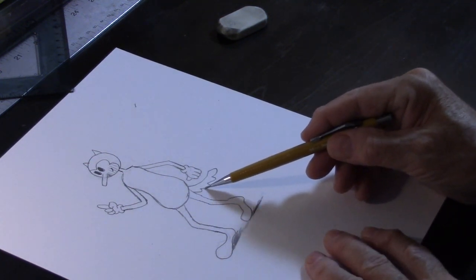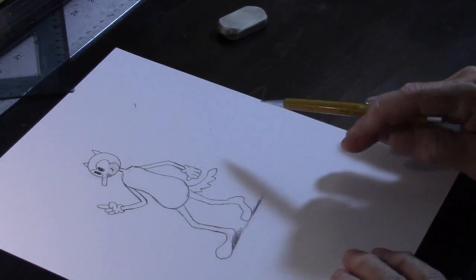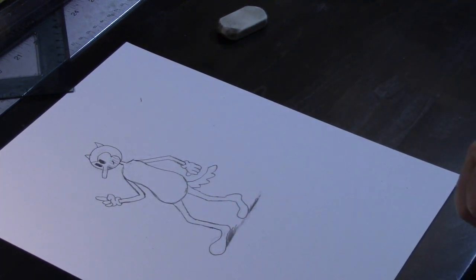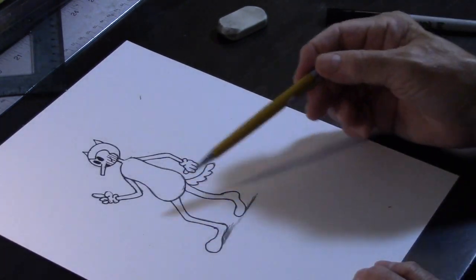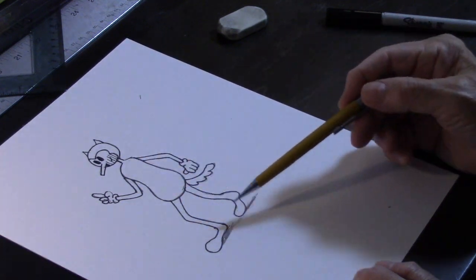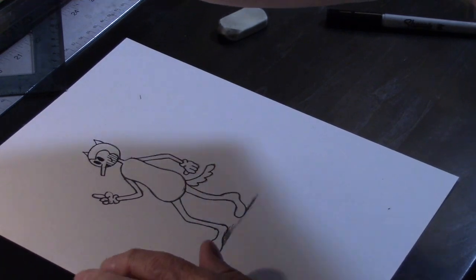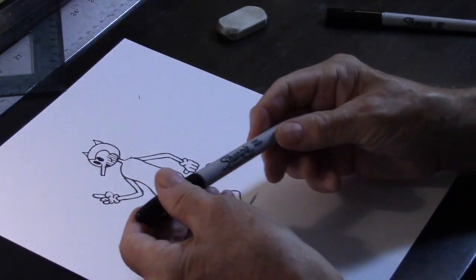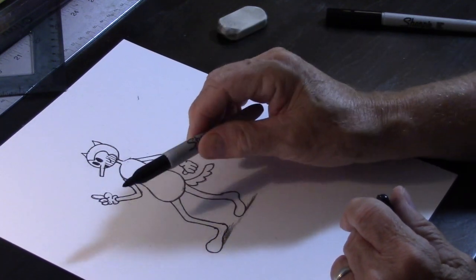Now a cat would have a tail. So we indicate a little tail here. Now we have the basic drawing. Let's ink that in and see what it looks like. Now that we have it all outlined. Let's go ahead and ink in the body. Because most of this is going to be black. So I'm going to use a Sharpie with a pretty good point on the end.